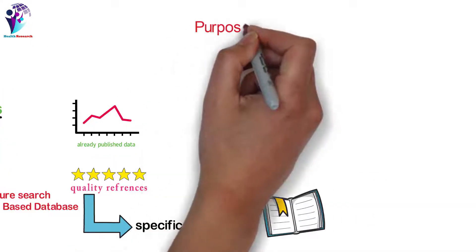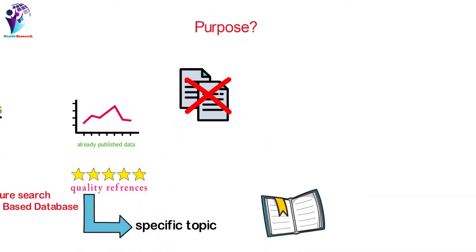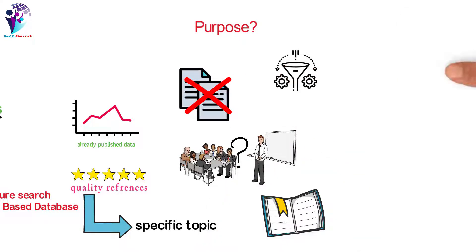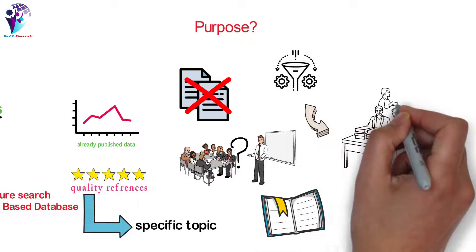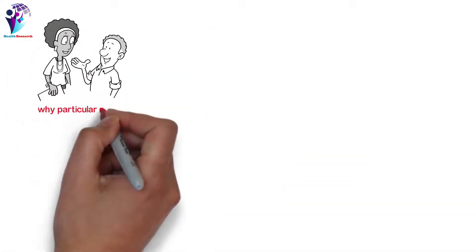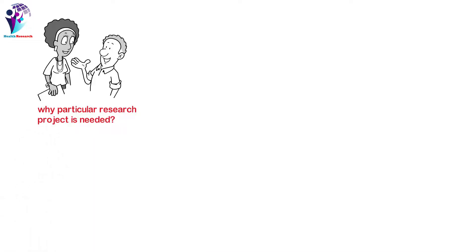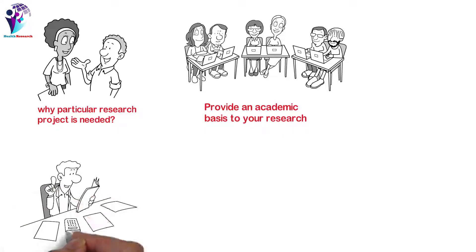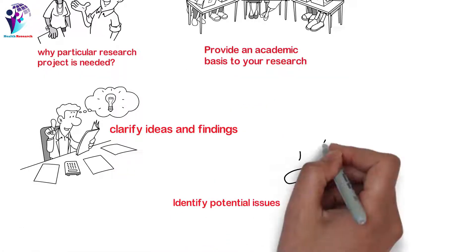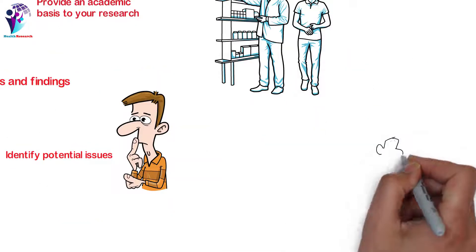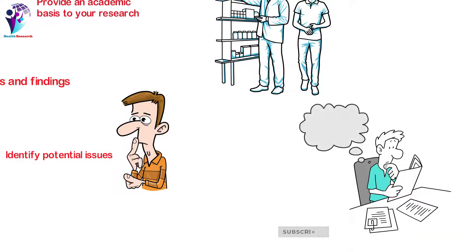The purpose of literature search includes: to prevent duplicating work that has been done before; to find out what others have learned and reported on the problem you want to study; to assist in refining the statement of the problem; to become familiar with various research approaches; to provide convincing arguments for why a particular research project is needed; to provide an academic basis to your research; to clarify your ideas and findings; to identify potential issues with the work you plan to do; to keep up with the latest developments in the field; and to document important facts and ideas in light of previous work.